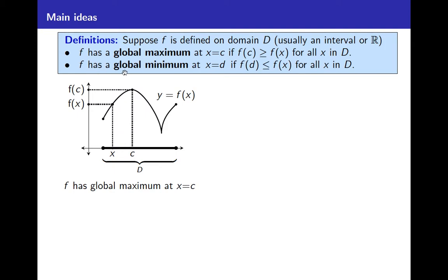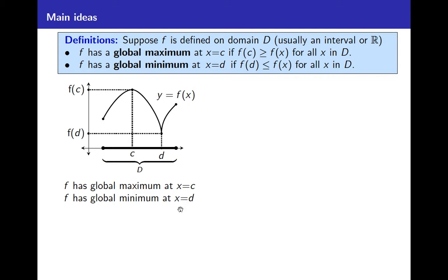We say f has a global minimum at x equals some number d if f of d is less than or equal to f of x for all x in the interval. In other words, f of d is as small as you could get, and that looks like it happens about right there — here's a d value for x and f of d is less than or equal to f of x for any x.